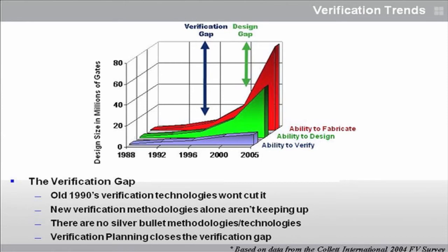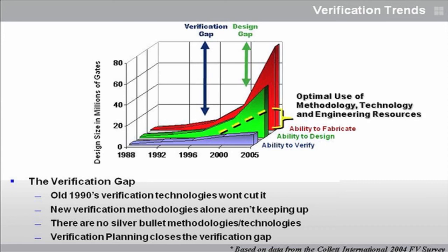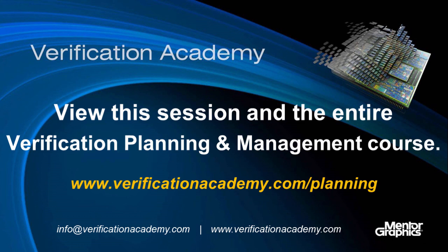The answer is that verification is now the toughest job you have to do. Our ability to fabricate has skyrocketed — they can fit huge systems on a chip now. The ability to design has gone up too, because they're reusing things. But what hasn't kept pace is verification. The ability to verify has not kept pace, so there's this verification gap. It just gets in the way of things working the very first time. Verification planning closes this gap — it's the best thing we have.